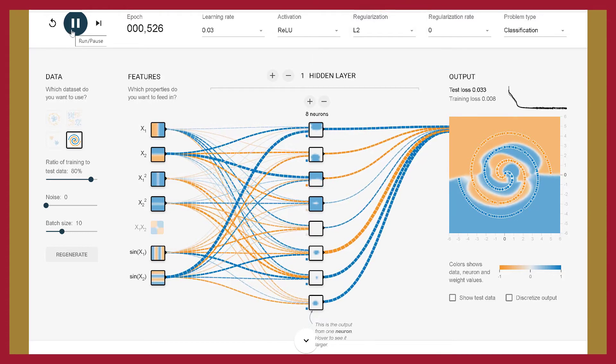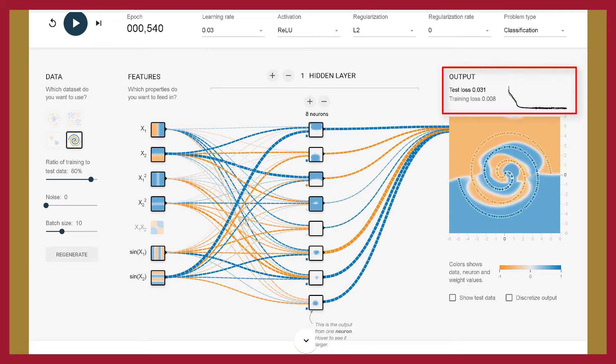With one hidden layer, the performance was better with eight neurons. The test loss was 0.031 and the training loss was 0.008. You can see that the neural network is learning the data. It seems to be doing a good job of classifying the spiral data.